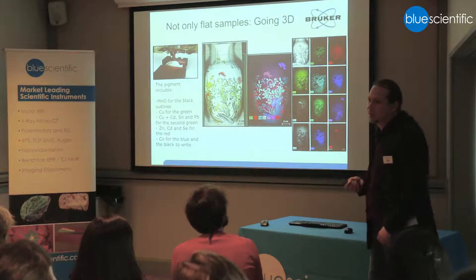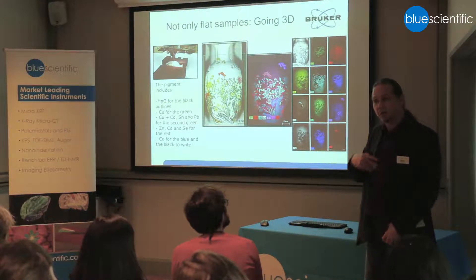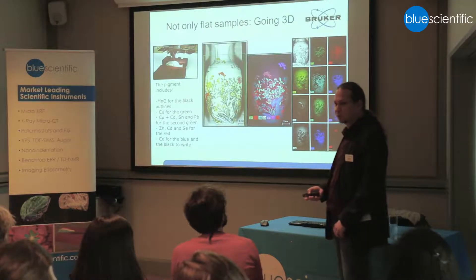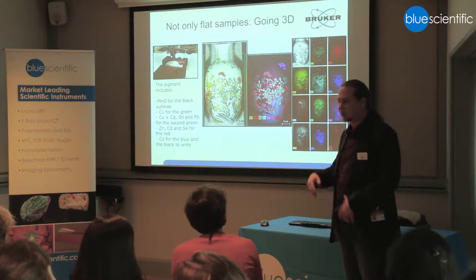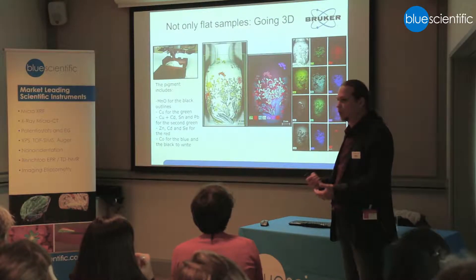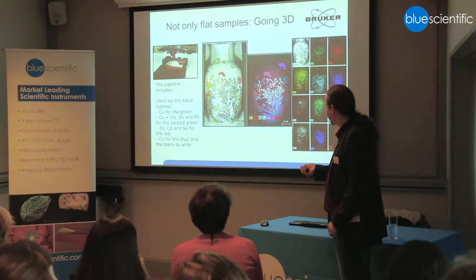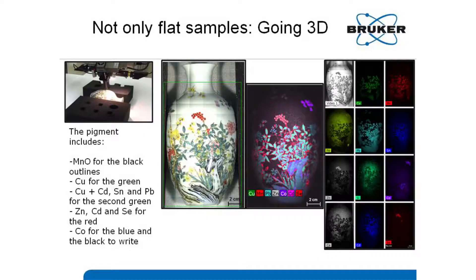In principle, you are not limited to using the instrument on flat objects — you can use it also on curved objects and get compositional information: what type of colors are used, identify the type. This was silver; I think there was some selenium used here for these things.